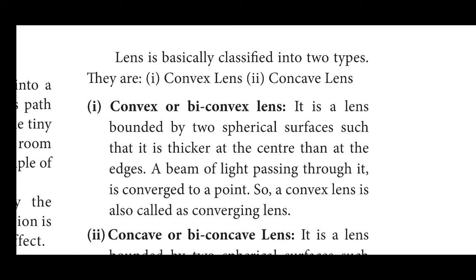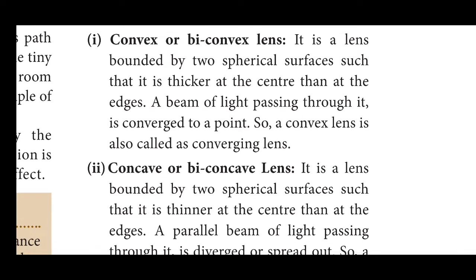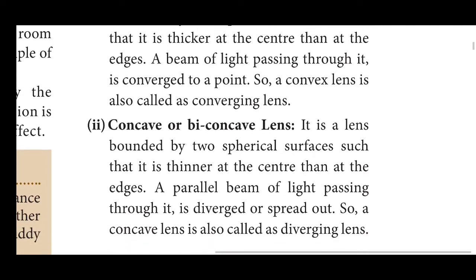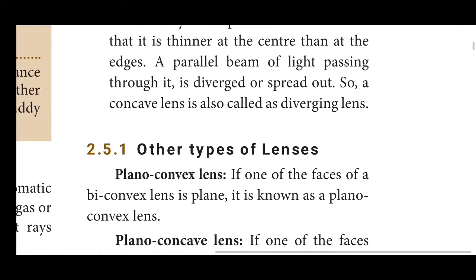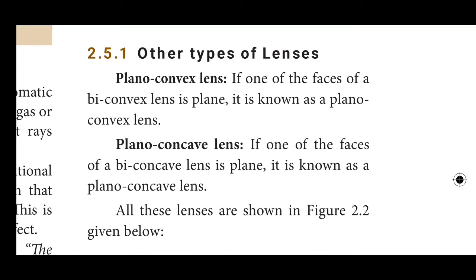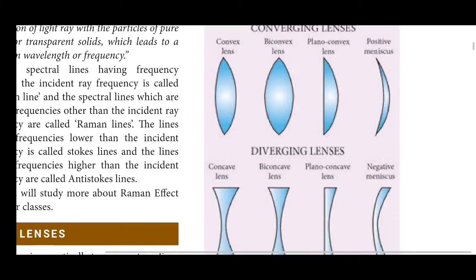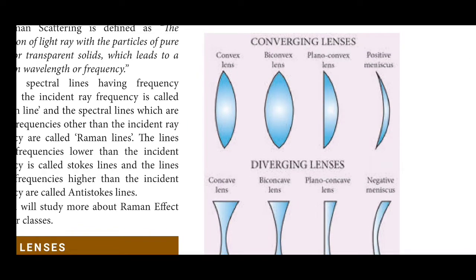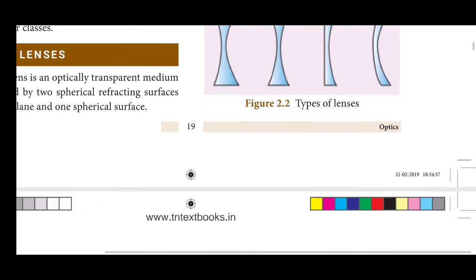Lenses are optical transparent media bounded by two spherical refracting surfaces. Lenses are of two types: Convex and Concave. A convex lens is bounded by two spherical surfaces and is thicker at the center than at the edges. A concave lens is thicker at the outer edges than at the center. Types include Plano-Convex and Concavo-Convex lenses.